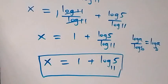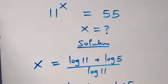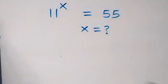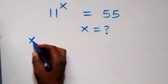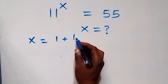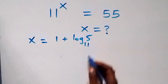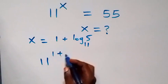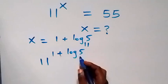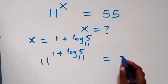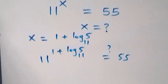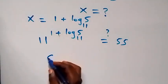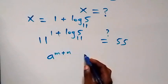Now let's check if this satisfies the given problem. From x equals to one plus log 5 to base 11, this becomes 11 raised to the power of 1 plus log 5 to base 11. Will this equal to 55? Applying the law of indices: a raised to power m plus n is the same as a raised to power m times a raised to power n.